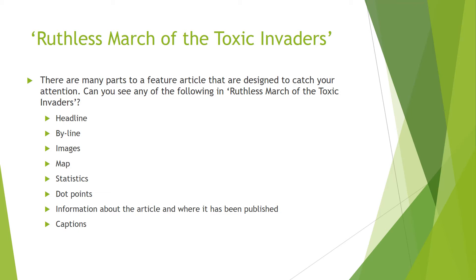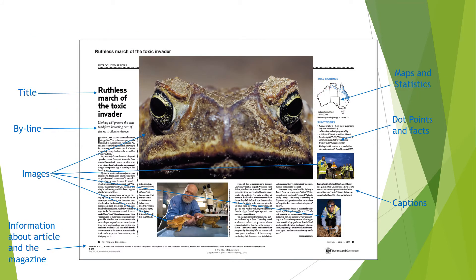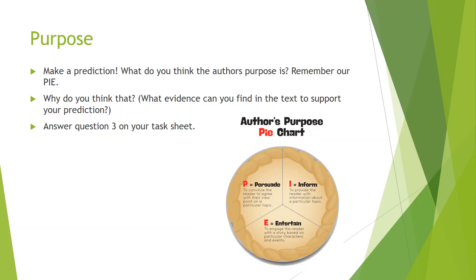Having a look here, we can see the title which is our headline - 'Ruthless Mulch of the Toxic Invader.' Underneath our headline is the byline - we're going to be learning about the byline in a future lesson, so don't worry too much if you're not sure what that means. We have images and we've also got information about the article and the magazine. There are maps and statistics, dot points and facts, and there are our captions.